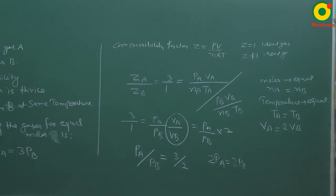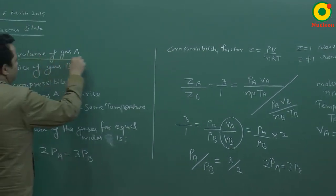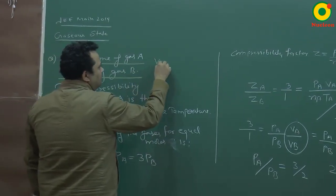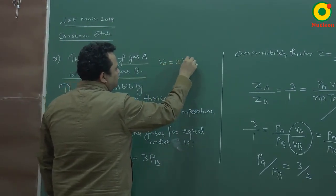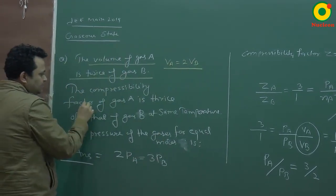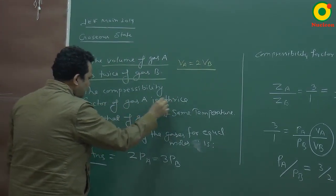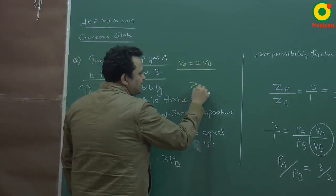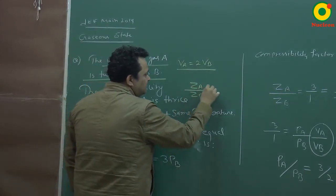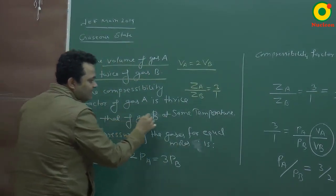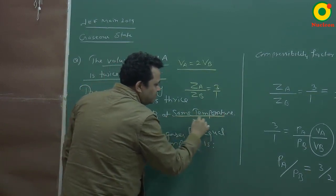So the next question is: the volume of gas A is twice of gas B, VA = 2VB. The compressibility factor of gas A is thrice of that of gas B, compressibility factor ZA upon ZB is thrice of that of gas B at same temperature.